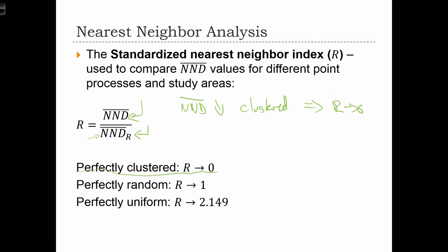If the data are random, then this ratio equals 1, because the empirical nearest neighbor distance matches the theoretical one under the random case.